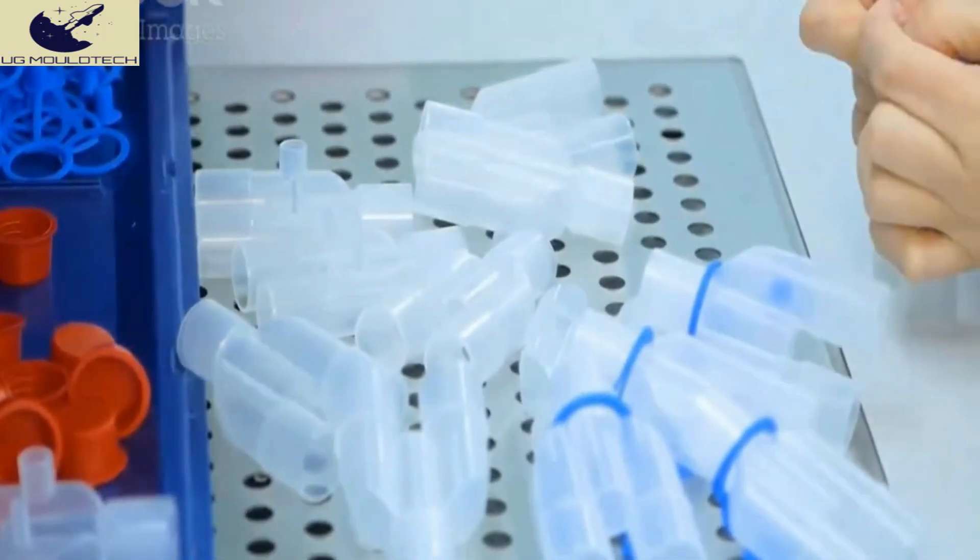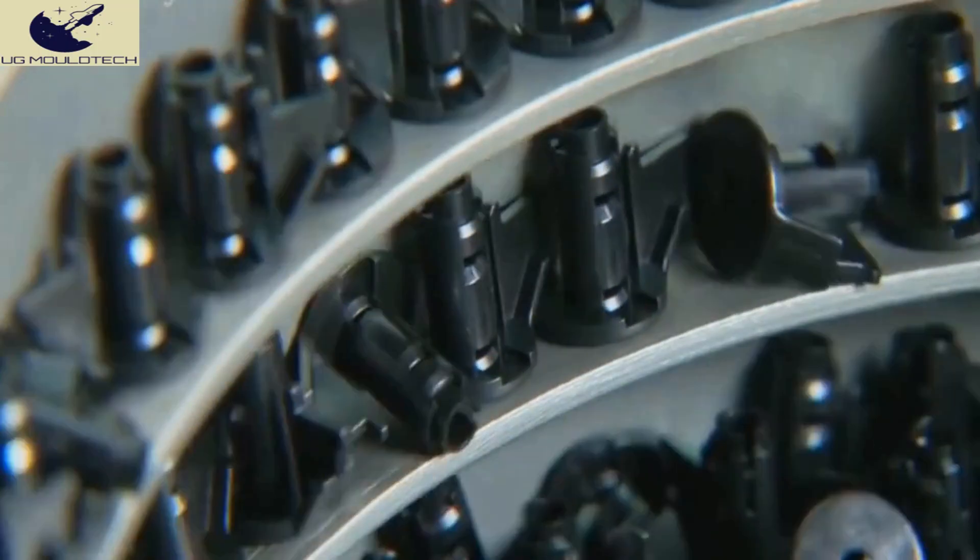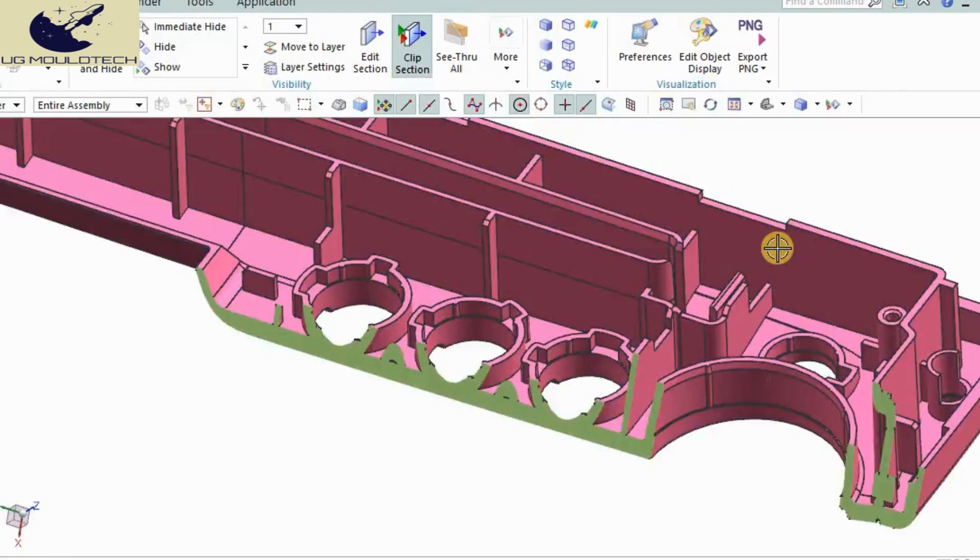Ribs are essential in plastic part design, providing strength and support without significantly increasing material usage. Proper rib design is crucial to prevent warping and to reduce weight. Remember, ribs should always be thinner than the walls they support to ensure optimal performance and manufacturability.